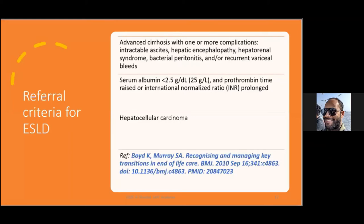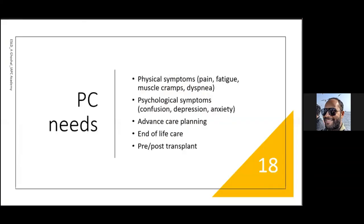The needs in ESLD include physical symptoms (to be discussed next), psychological symptoms such as confusion, depression and anxiety — confusion importantly arising from hepatic encephalopathy. Advanced care planning in ESLD is critical. End-of-life care, both pre- and post-transplant, can involve palliative care. A 2020 paper in the Journal of Pain and Symptom Management addresses healthcare utilization and end-of-life care outcomes for decompensated cirrhosis patients based on transplant candidacy.